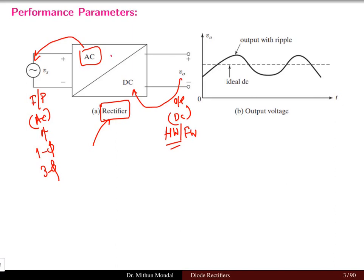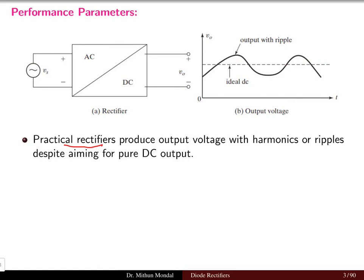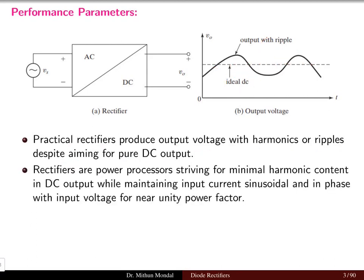The target of using a rectifier is to get an ideal DC supply at the output voltage, but what we get is voltage with a ripple. The ripple is a slight deviation from the ideal voltage in the output. Practical rectifiers produce output voltage with harmonics and ripples despite aiming for a pure DC output. Rectifiers are power processors striving for minimal harmonic content.